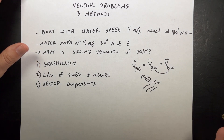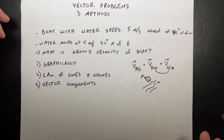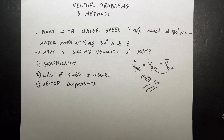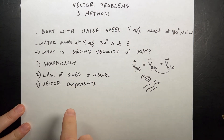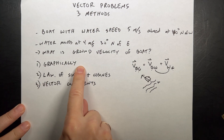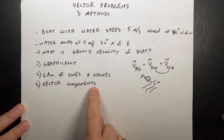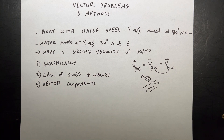Vector addition problems. I'm going to do a vector addition problem not like I normally do for my normal physics class. I'm going to do it like it would be done in a high school physics class, which is not the way I would do it. But if you have to do it this way, you have to do it this way. So I'm going to present a problem and solve it three different ways: graphically, using the law of sines and cosines, and then the way I would do it.